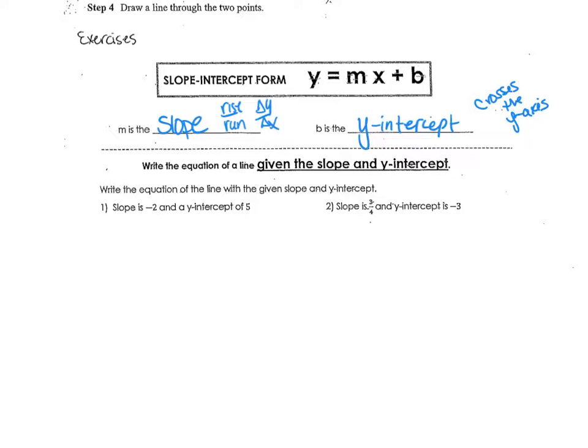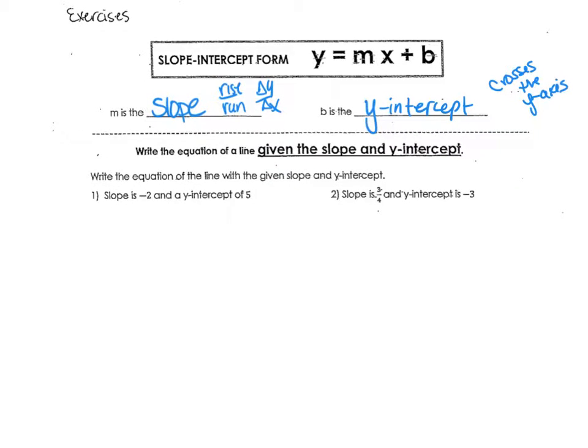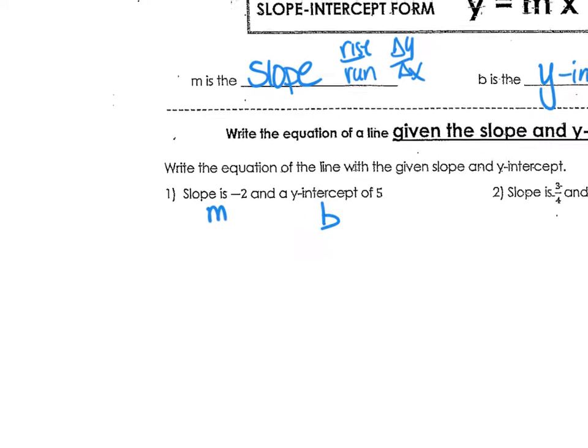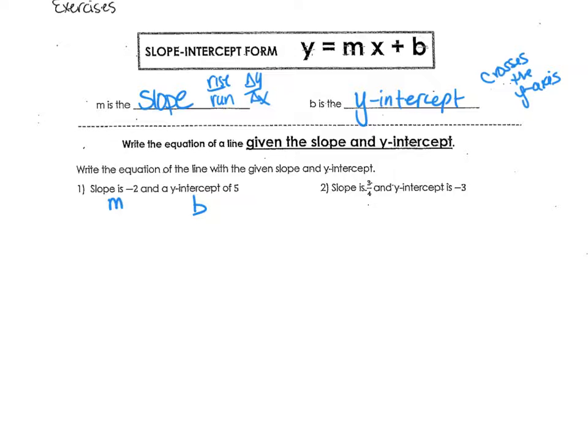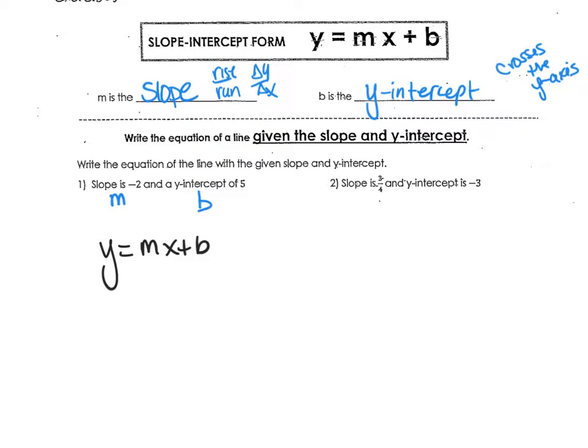Write the equation of the line with the given slope and the y-intercept. So remember, slope is M, y-intercept is B, and it wants it to be in that equation format.